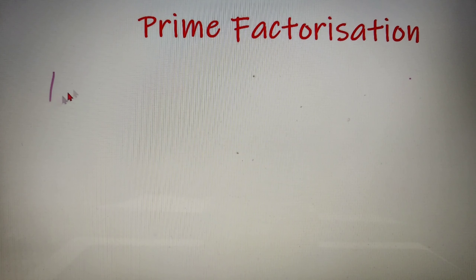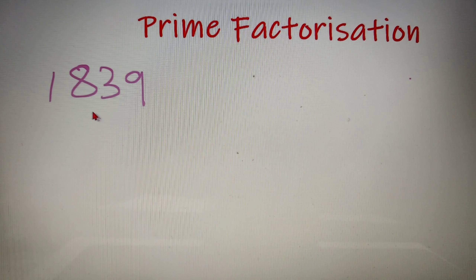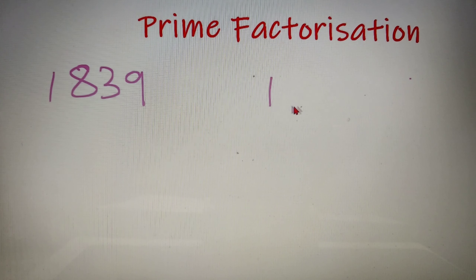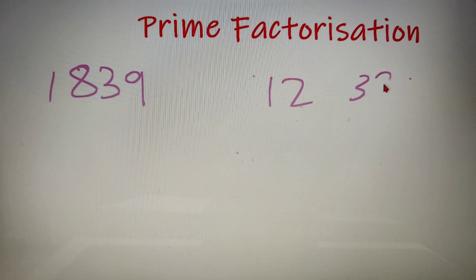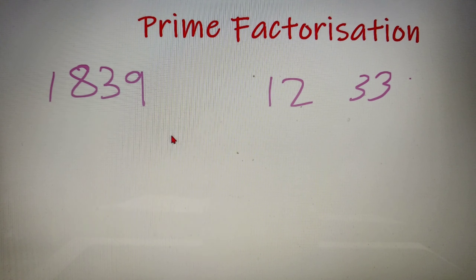Now let's say I give you the number 1839 and tell you to prime factorize it. This number is not as simple as 12 or 33, so let's learn the general method of prime factorization of a number.